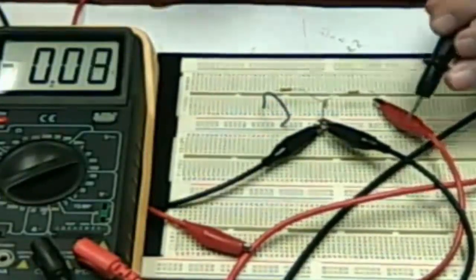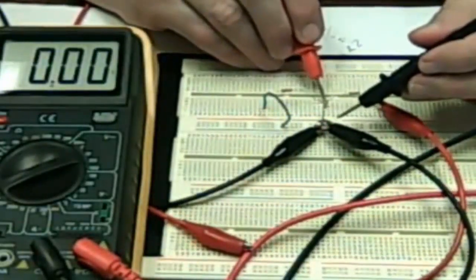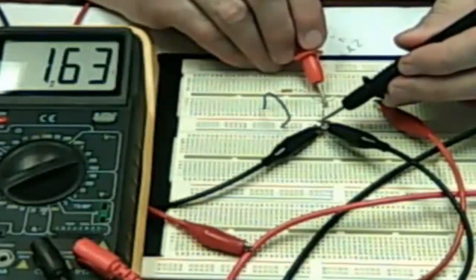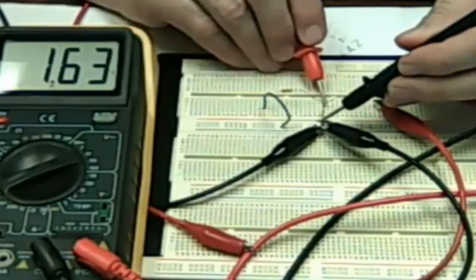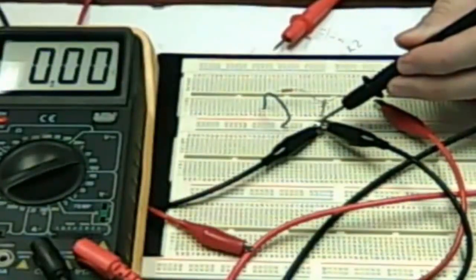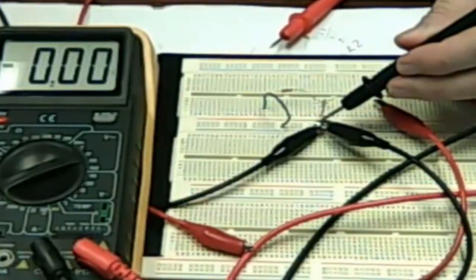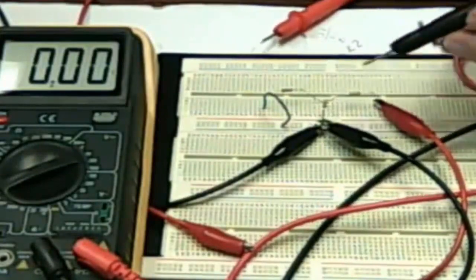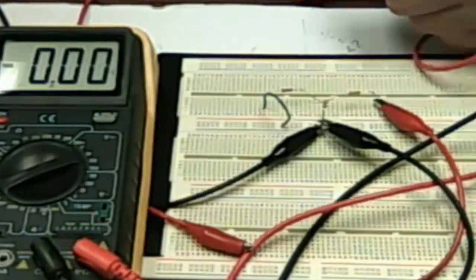And voltage 3, or the voltage across resistor 3, is now, again using the same polarity, 1.63. So again, I will record those voltages in my table.